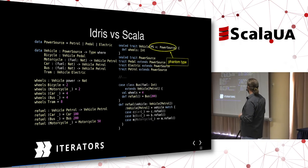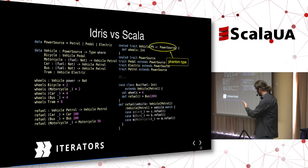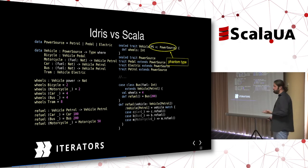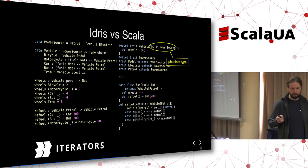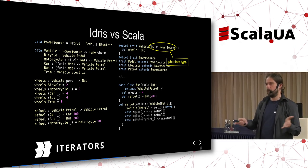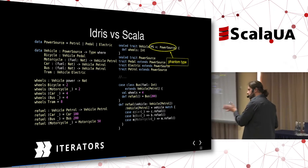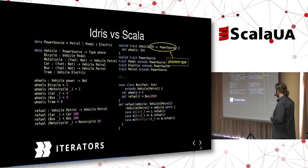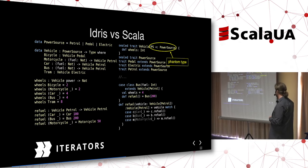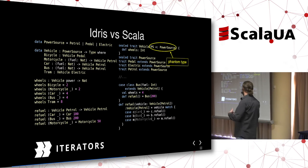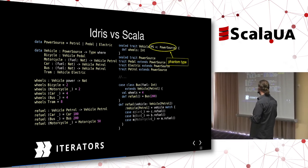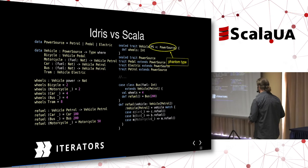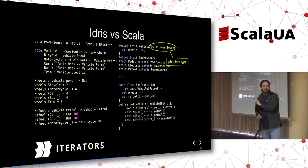We can go further with phantom types — a technique where we have a type parameter with no runtime representation, used only by the type checker. We encode each power source as a sealed trait, and the exhaustiveness check still works. We can even use mixins to easily model hybrid vehicles combining multiple power sources — something that requires advanced techniques in Idris but is natural in Scala. So Scala wins in this example.